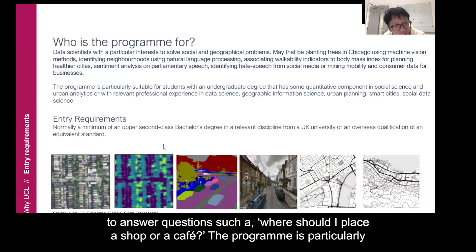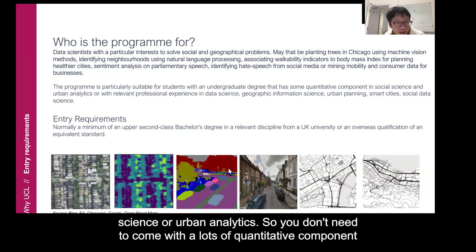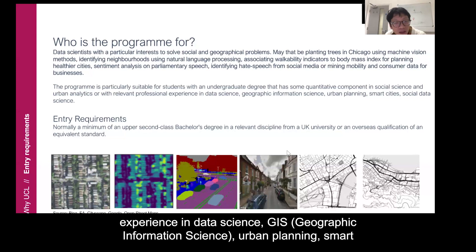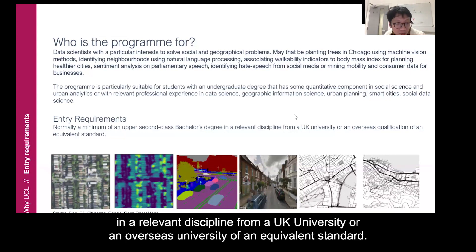The program is particularly suitable for students with an undergraduate degree that has some quantitative component in social science and urban analytics. You don't need to come with a lot of quantitative background because you'll learn much of that in the fundamental modules, or with relevant professional experience in data science, GIS, geographic information science, urban planning, smart cities, and social data science. The entry requirement is a 2.1 in a bachelor's degree in a relevant discipline from a UK university or an overseas university of an equivalent standard.